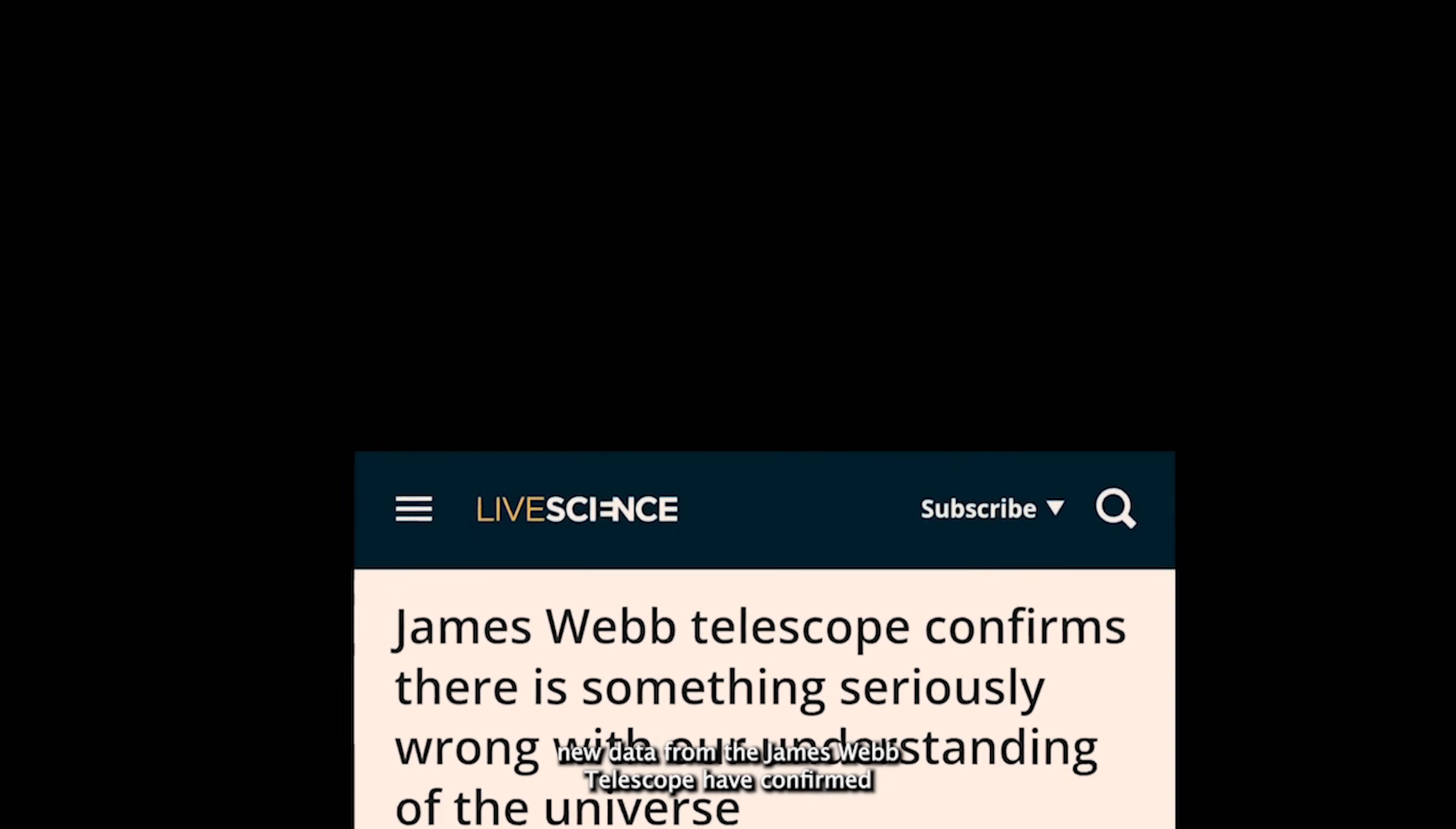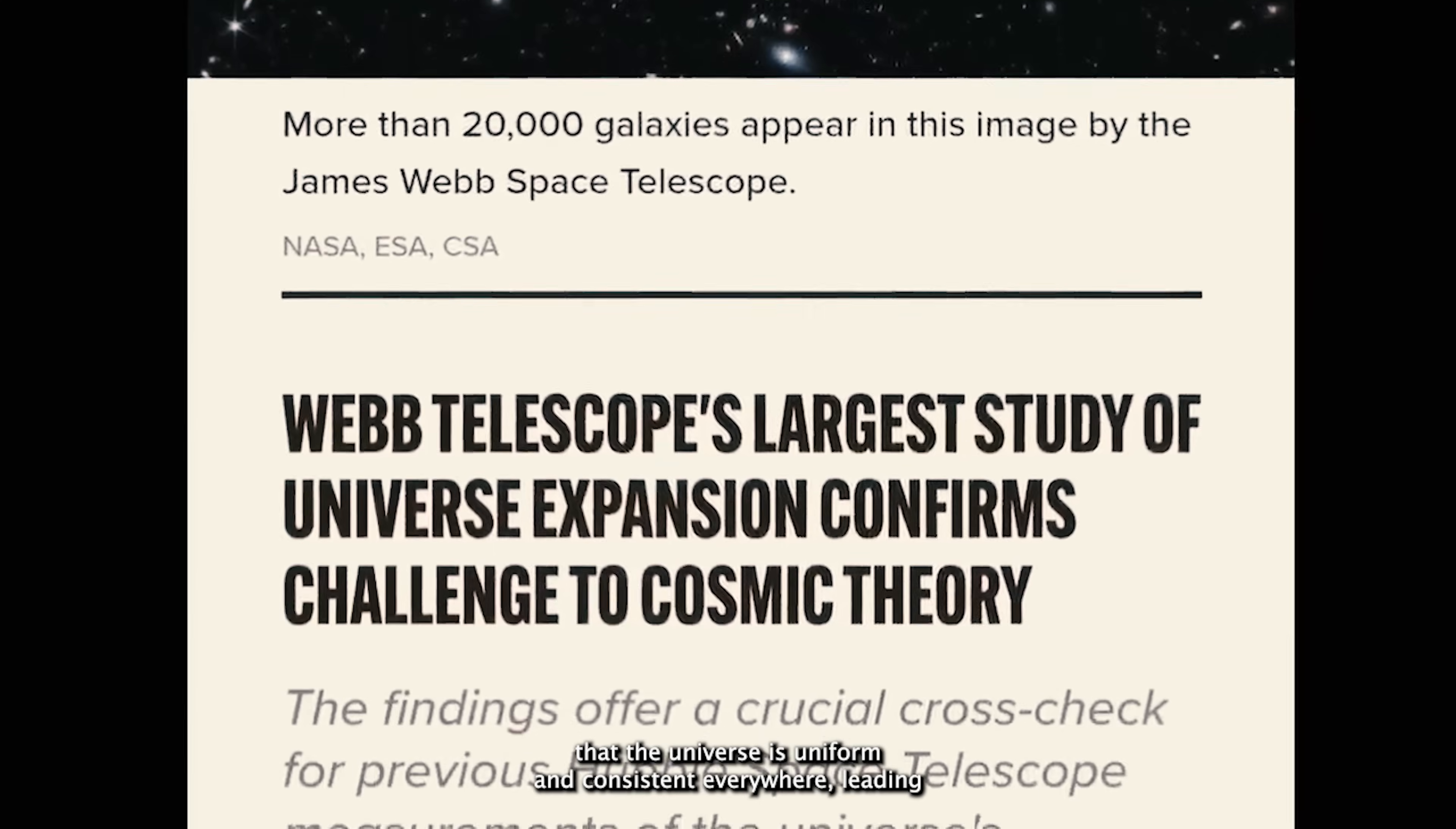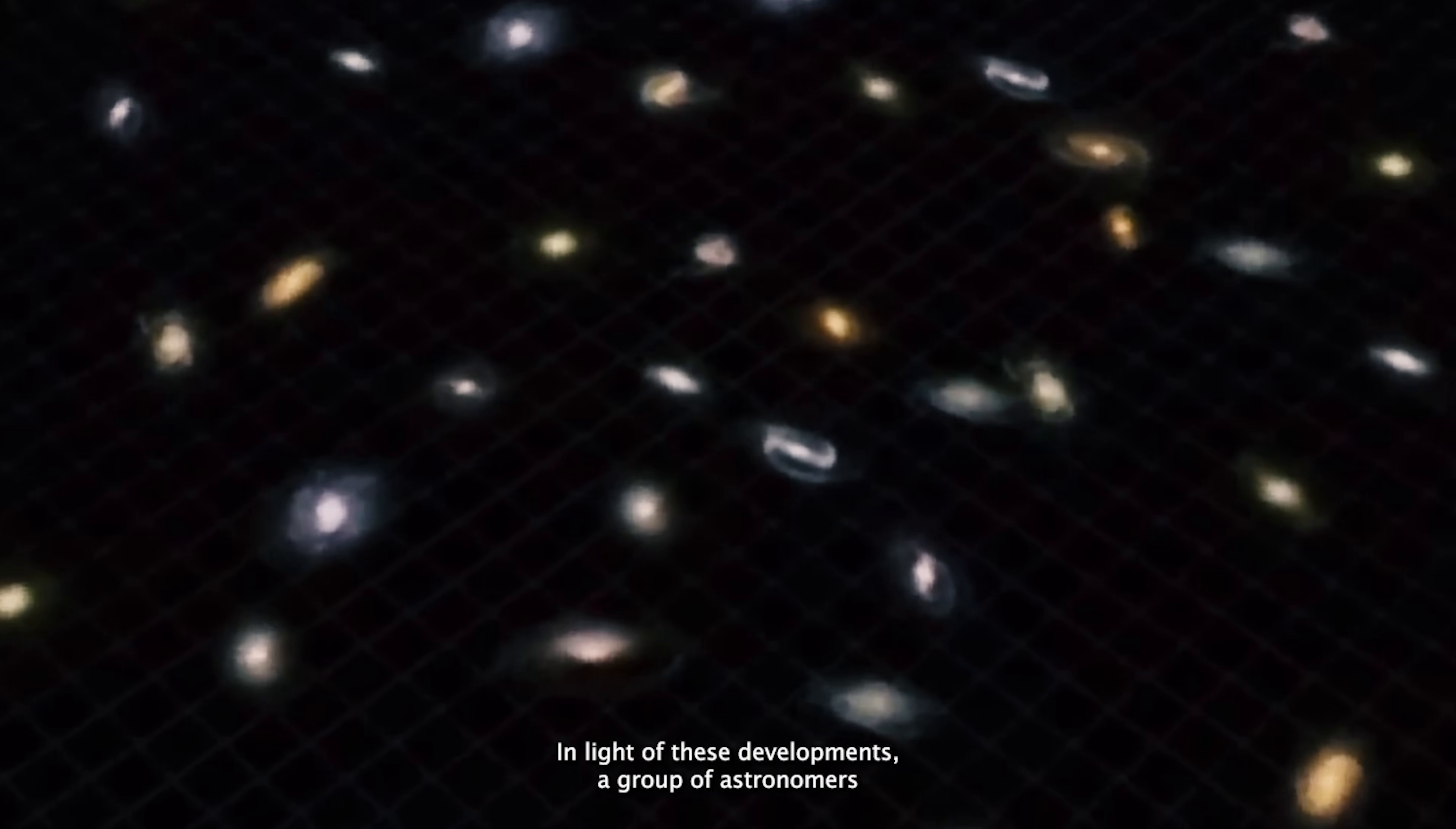Additionally, new data from the James Webb telescope have confirmed that previous measurements were accurate, showing that the expansion of the universe is not uniform across space. This inconsistency in the universe's expansion rate indicates that the universe might not be homogeneous. These discoveries are challenging the long-held belief that the universe is uniform and consistent everywhere, leading scientists to reconsider the distribution of dark matter and dark energy. Understanding the true nature of dark matter and the cosmological constant has become one of the greatest challenges in modern cosmology. These recent findings are shaking the foundation of our basic understanding of the universe, and scientists are still uncertain about what might be wrong with the current theories.